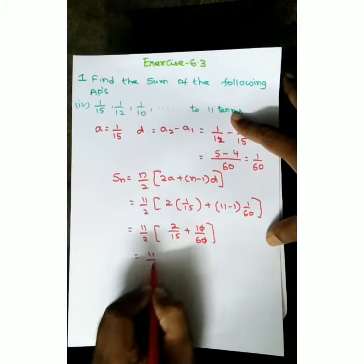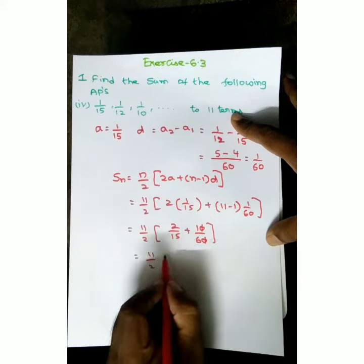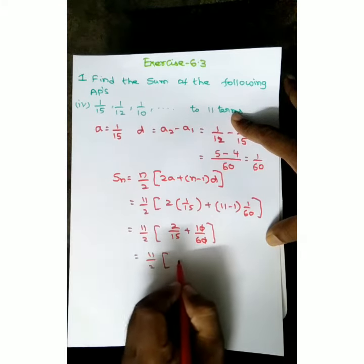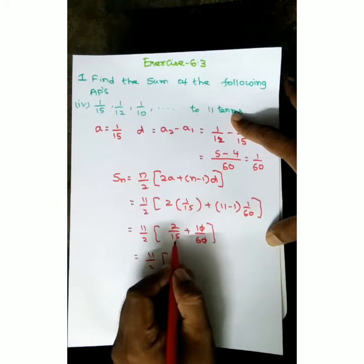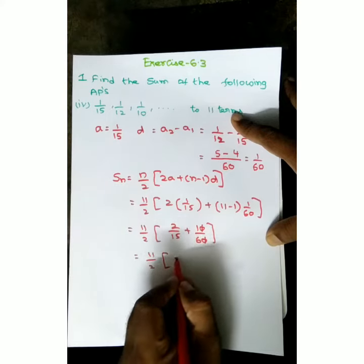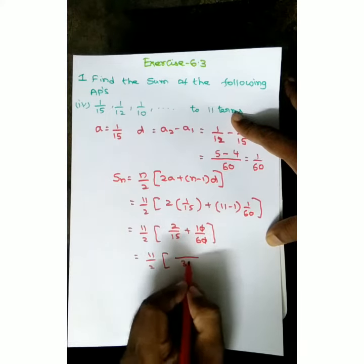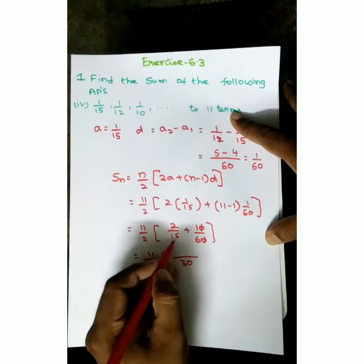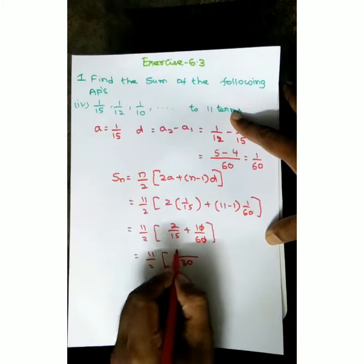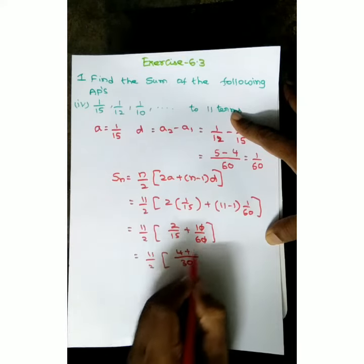11 by 2. LCM of 15 and 6 is 30. 15 twos are 2, twos are 4. 6 fives are 5, so 4 plus 5.